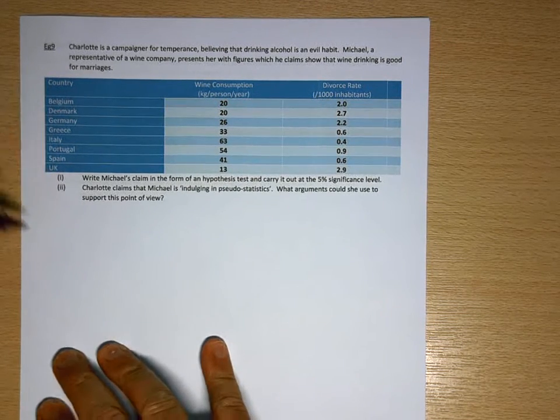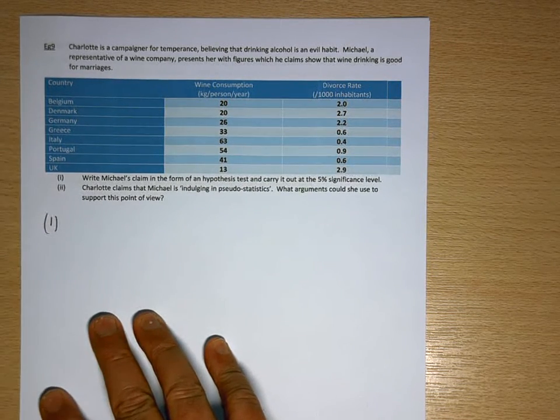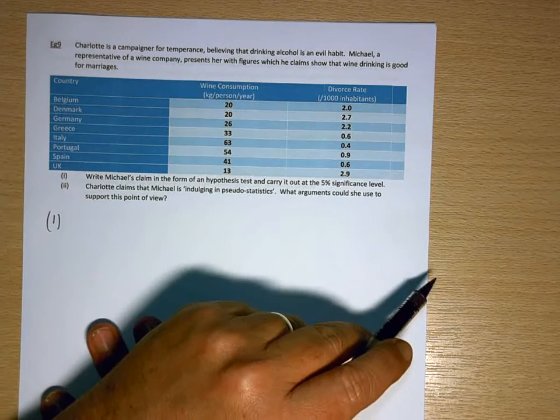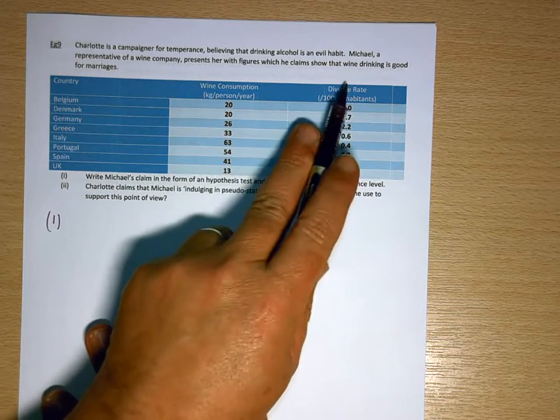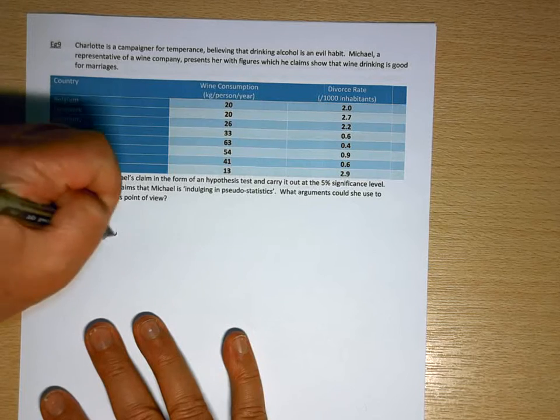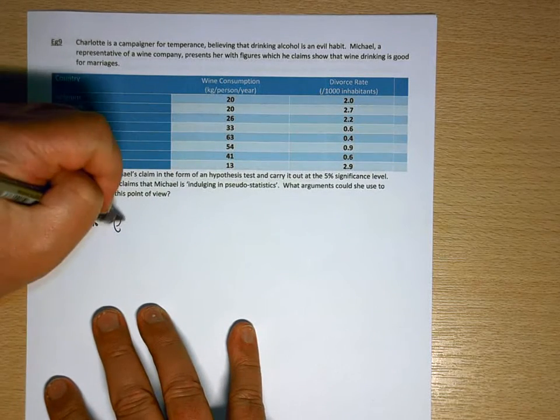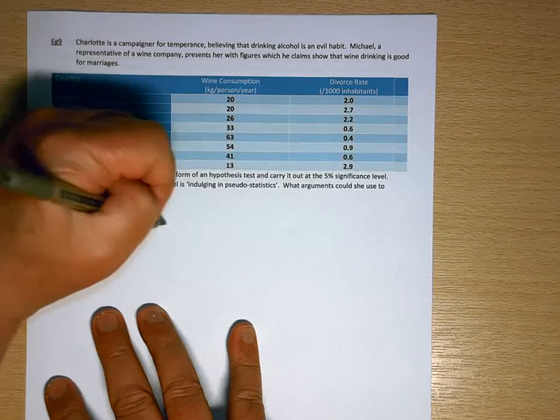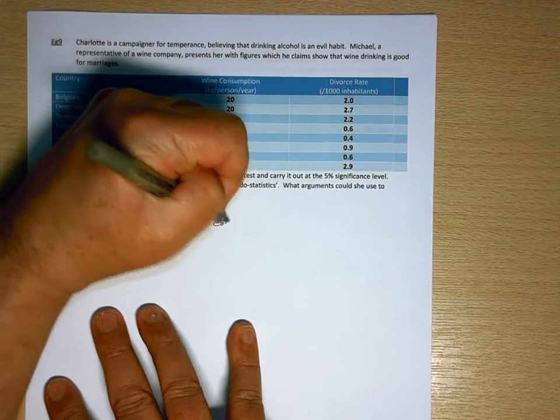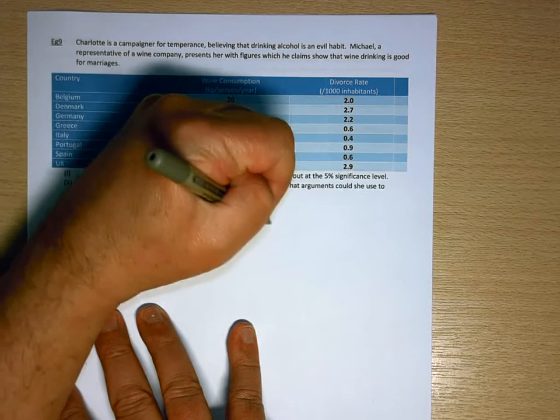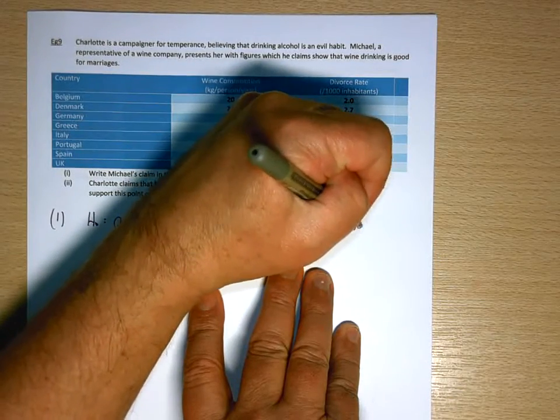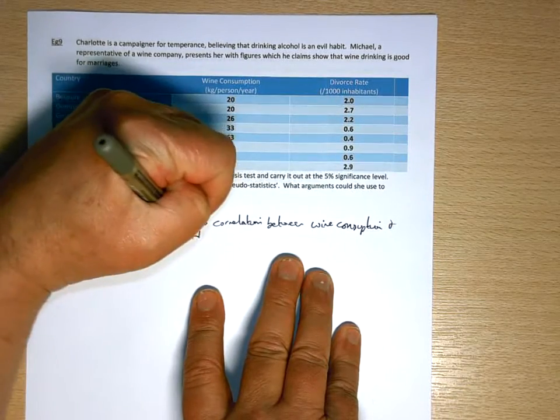So write Michael's claim in the form of a hypothesis test. Well, what Michael is claiming is that the more wine you drink, the lower the divorce rate, because he's showing that wine drinking is good for marriages. So H0 would have a parent population correlation coefficient of 0, which is there is no correlation between wine consumption and divorce rate.